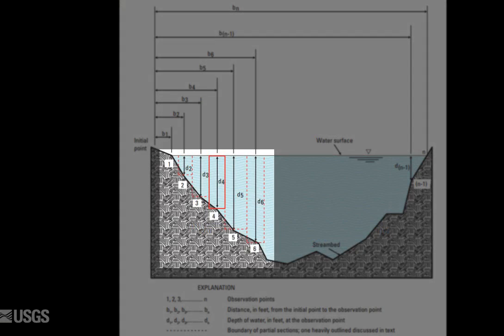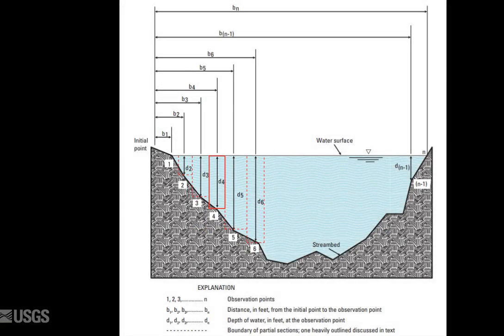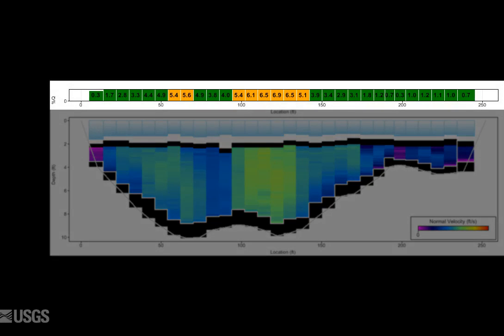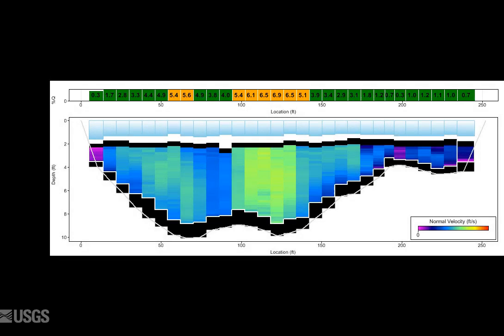Notice the depth and velocity at each station extends halfway to the next and previous stations. When selecting the location for these stations, we need to ensure that no station has more than 10% of the total flow, and that ideally, no station has more than 5% of the total flow, including the edge sections.